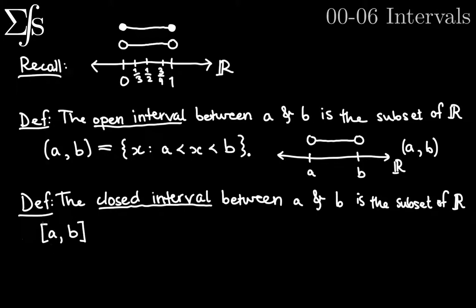The brackets are just these square ones — they look like little half rectangles. I sometimes accidentally refer to these curly braces as brackets, but those are braces. These square ones are brackets. The sort of wiggly pointy ones are braces, and parentheses are just the curved little arcs. So the closed interval between A and B is the subset of R, bracket A comma B bracket, which is equal to the set of all X such that A is less than or equal to X is less than or equal to B.